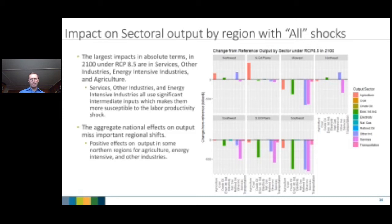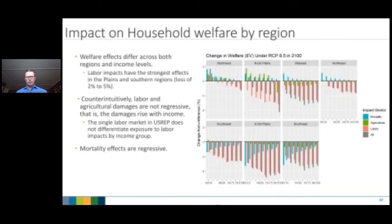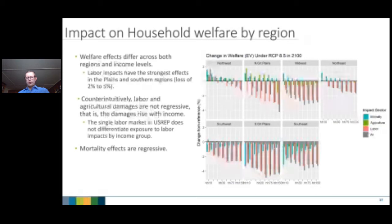Looking at household welfare by region, we examine the change in equivalent variation across regions for mortality, agriculture, labor, and all impacts combined. Labor impacts have the strongest effect and are greater in southern regions, with welfare changes roughly 2–5% — quite substantial. Surprisingly, welfare losses are slightly elevated relative to GDP losses, whereas normally you would expect some mitigation. Also, labor and agricultural damages are not regressive — damages tend to rise with income, likely because US-REP has a single labor market that assumes everyone is impacted by decreased labor productivity from heat stress.